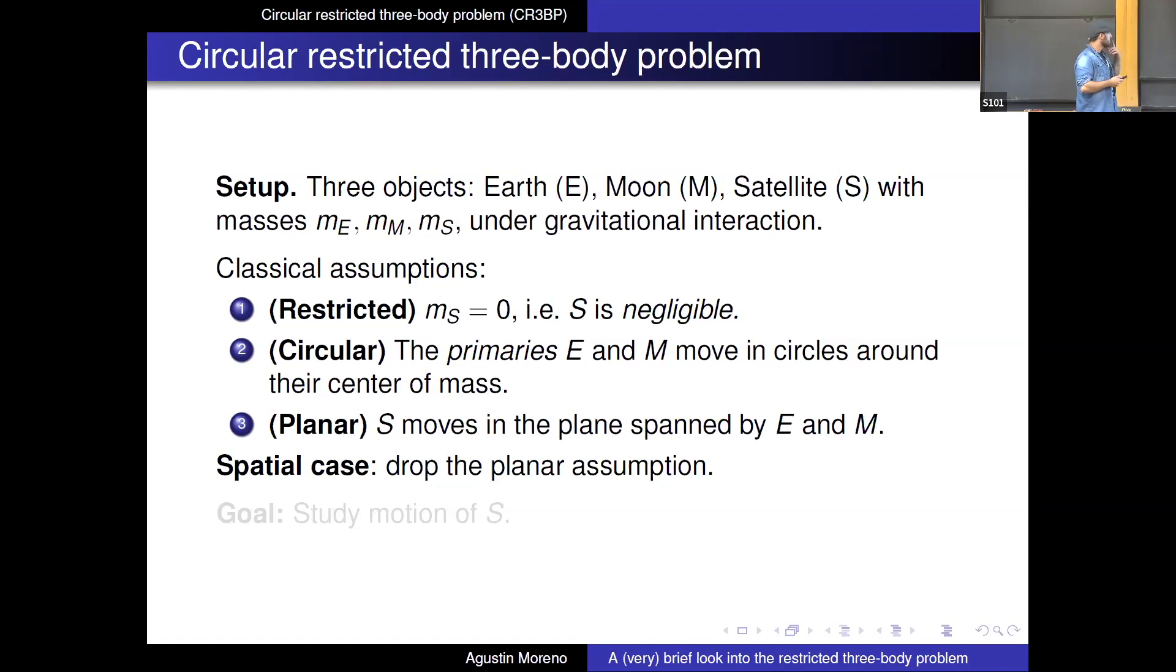There's some classical assumptions that people have made in the past in order to simplify the situation. You can look at, for example, the restricted case in which you assume that the mass of the satellite is zero, so it's negligible when you compare it to the other two, which we call the primaries, so the Earth and the Moon.